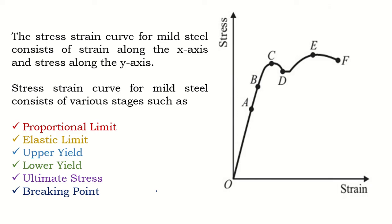We have various stages before mild steel fails: the proportionality limit, elastic limit, upper yield point, lower yield point, ultimate stress point, and the breaking or fracture point. We will look at each one and understand their significance.